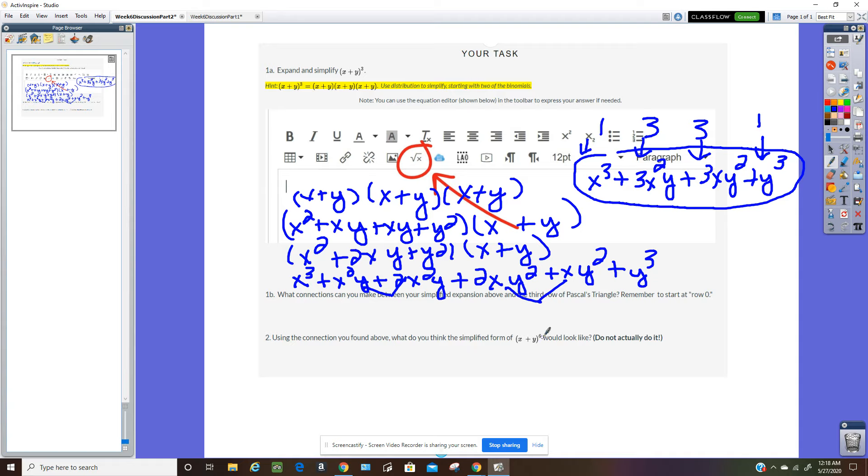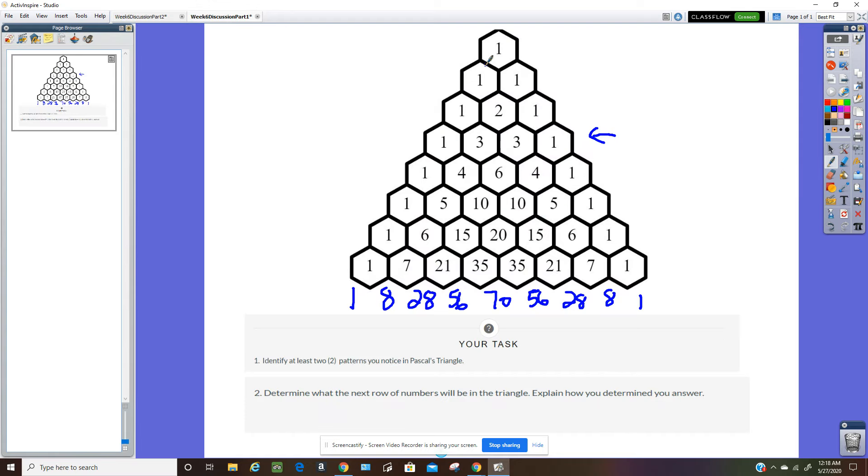Using that connection, what would be x plus y to the 6? What would that look like? And they said, don't actually multiply that together. It would take you a long time. We want to go to Pascal's triangle again here. Since we're doing the 6th power, we want row 6. We're actually the 7th row here.